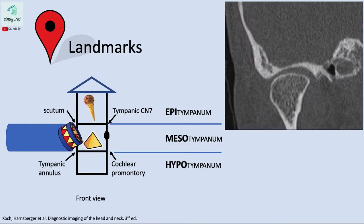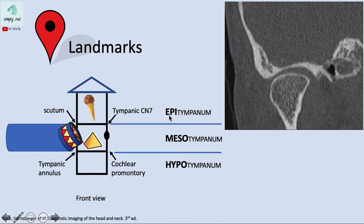The landmarks delineating the three floors of the middle ear are called the epitympanum, mesotympanum, and hypotympanum. Since the lateral margins are also the attachments of the tympanic membrane, it's easy to remember the margins of the epi, meso, and hypotympanum by remembering the attachment of the tympanic membrane.